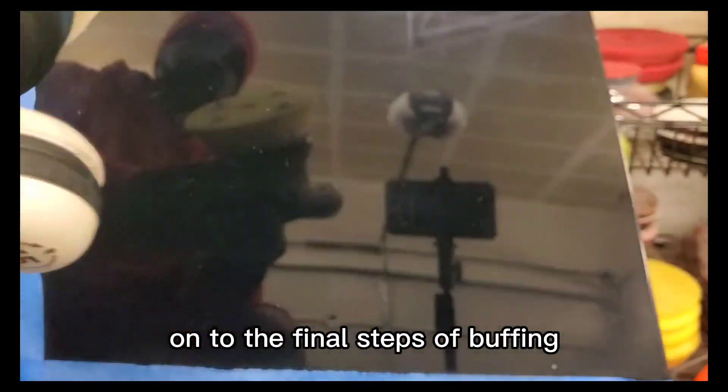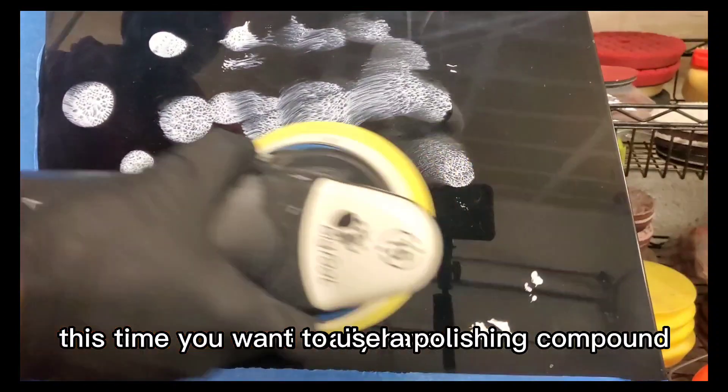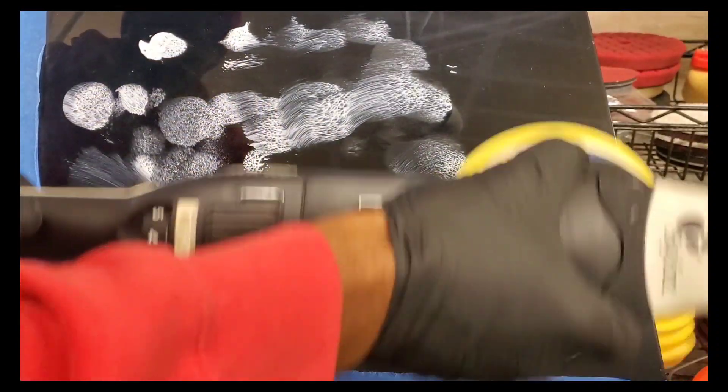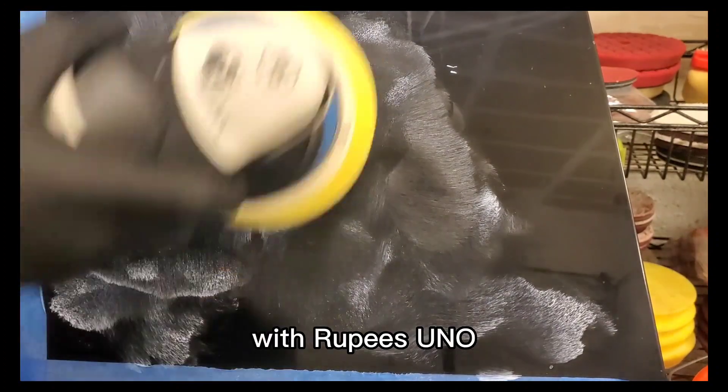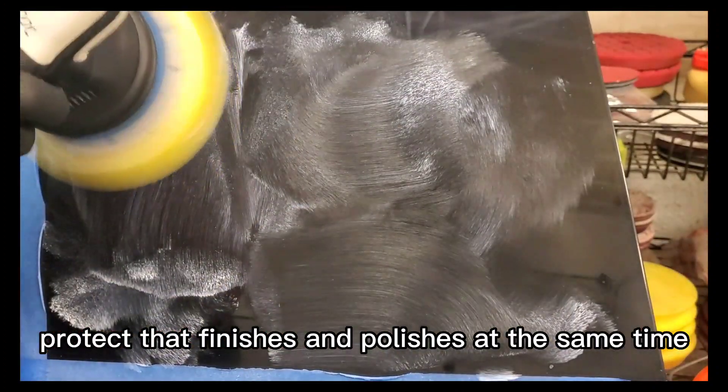On to the final steps of buffing. This time you want to use a polishing compound with a polishing pad. In this video I'm using a five inch Rupes yellow finishing pad with Rupes Uno Protect that finishes and polishes at the same time.